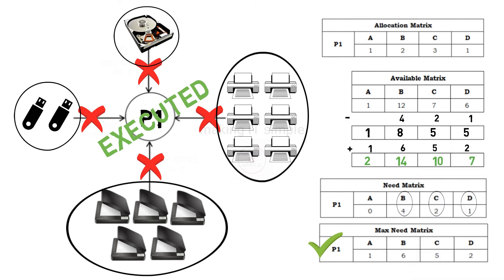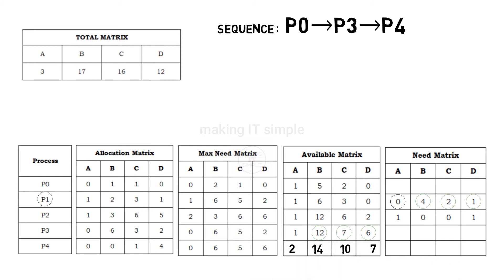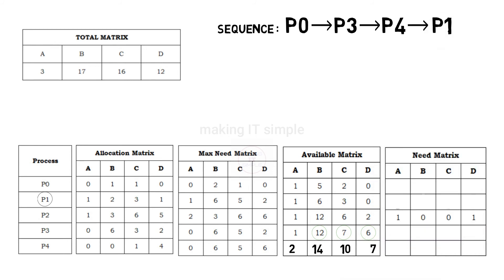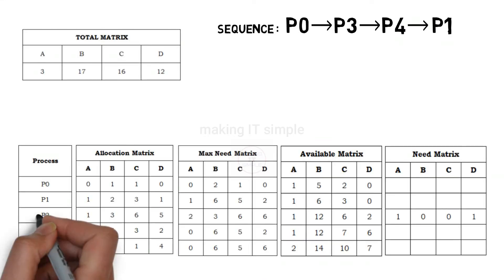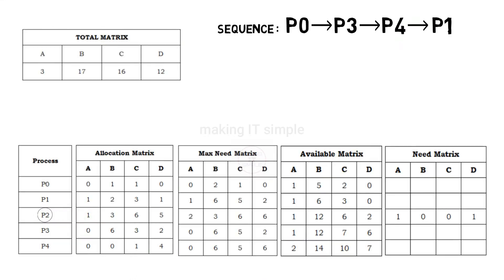So now the updated matrices will be as follows, available resources will get updated. P1's need is completed. P1 will get added to the sequence after P4. Now let us check the last remaining process, P2.